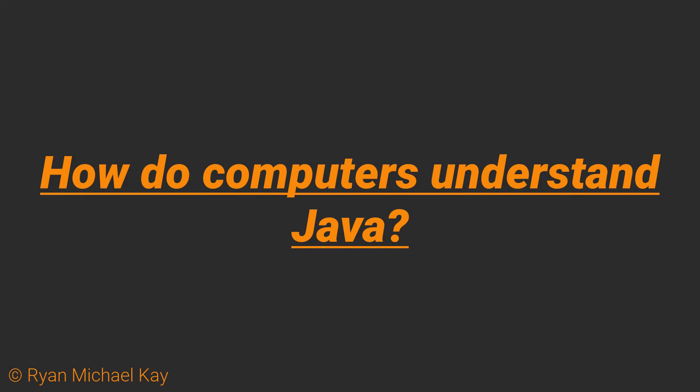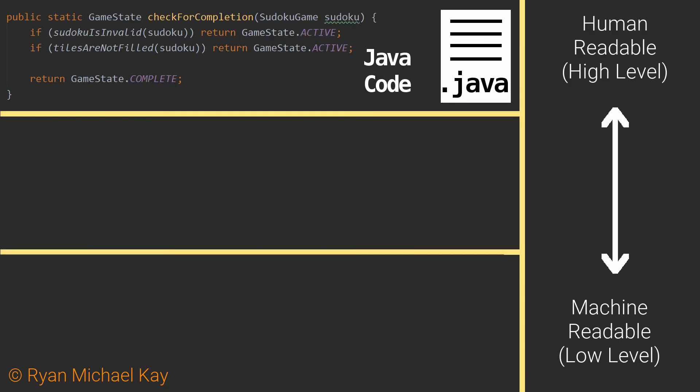The key point is that digital computers cannot understand high-level programming languages such as Java in their original state. Therefore, all high-level human-readable programming languages must be compiled — which is another word for translated — into binary. The actual process to go from the Java code we write to some kind of executable binary language is quite complex, so I will only give you a simplified overview.